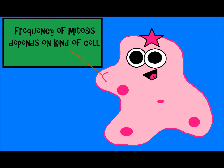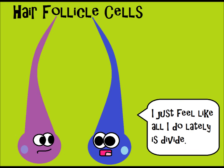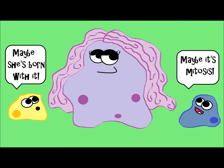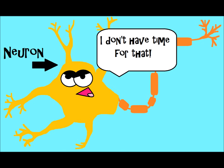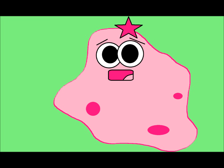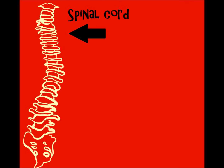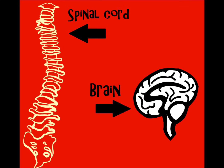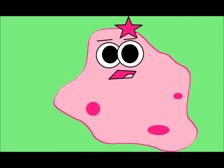Now, depending on what kind of cell it is, it might do mitosis more or less often. For example, your hair follicle cells do mitosis frequently, which is why your hair can grow up to half an inch every month. But other cells, like your brain cells — your neurons — some of them actually do not perform mitosis, which is why if you have some type of major injury to the spinal cord or to the brain, sometimes those do not heal very well, because those cells do not replicate.